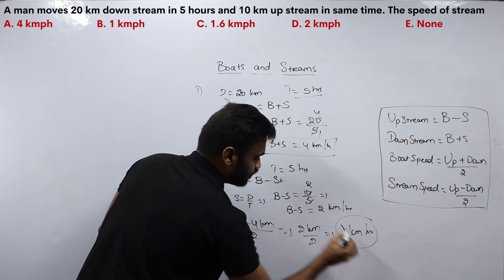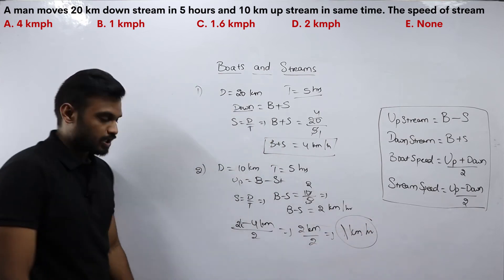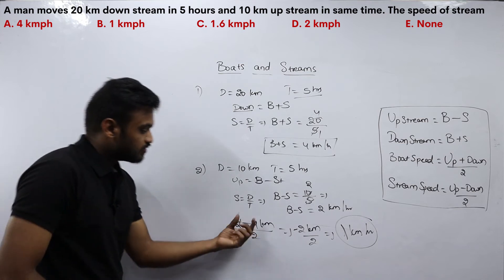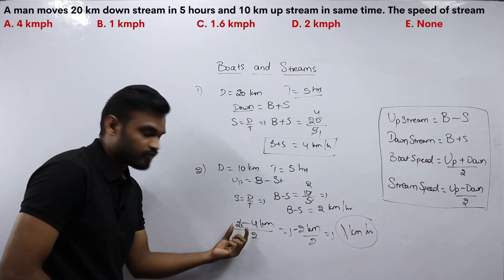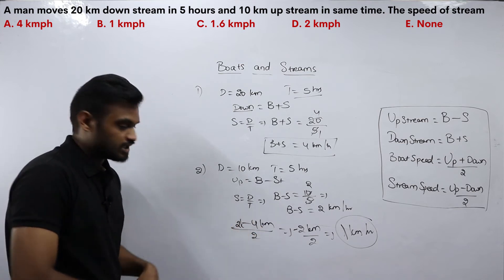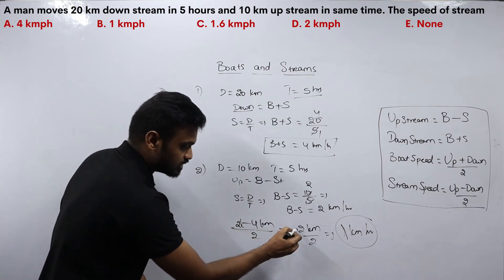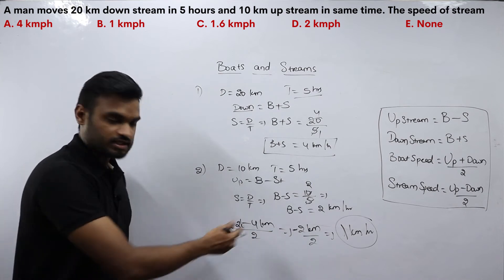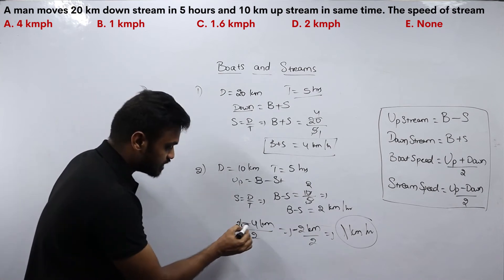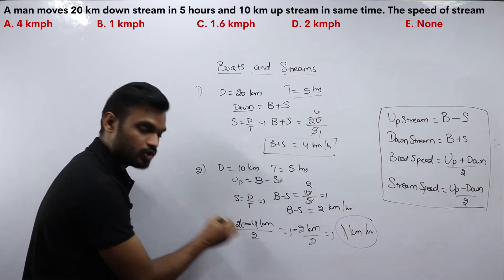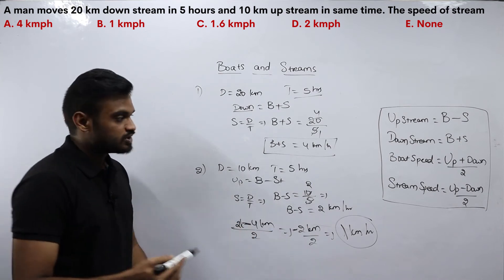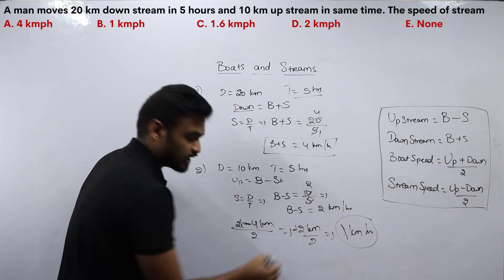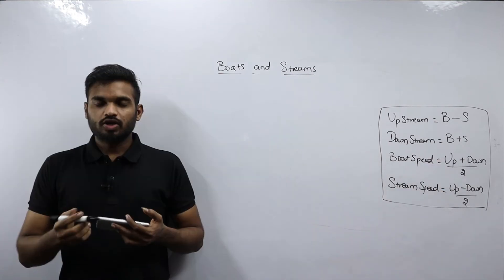The speed of stream is 1 km/h. The negative sign appeared because we subtracted the greater value from the lower value; if we subtract upstream from downstream instead, we get a positive sign. The magnitude of stream speed is 1 km/h.